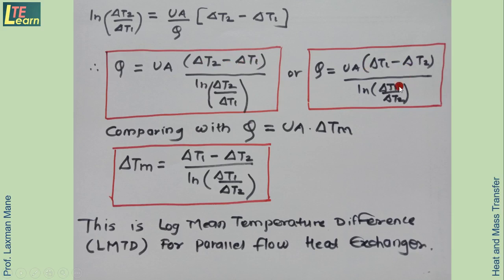Comparing with the equation Q equals U A delta TM, this delta TM is what we call log mean temperature difference, LMTD, for the parallel flow heat exchanger. Delta TM equals delta T2 minus delta T1 divided by natural log of delta T2 upon delta T1.